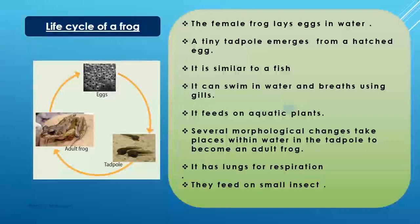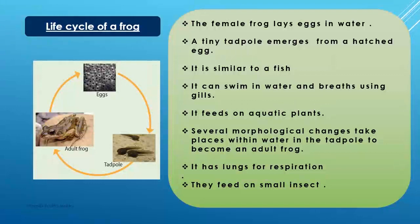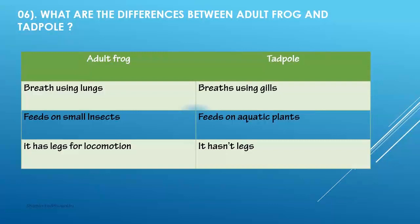Several morphological changes take place within the water in the tadpole to become an adult frog. The adult frog has lungs for respiration and feeds on small insects. What are the differences between adult frogs and tadpoles? Adult frog breathes using lungs, but tadpole breathes using gills. Adult frog feeds on small insects; tadpole feeds on aquatic plants. Adult frog has legs for locomotion, but tadpole does not have legs.